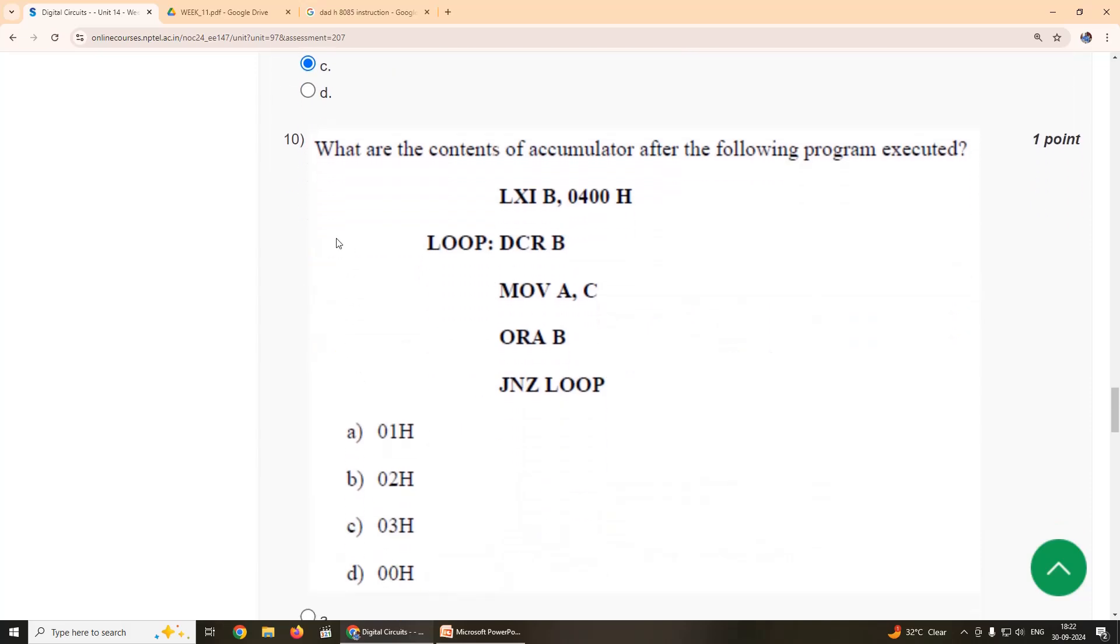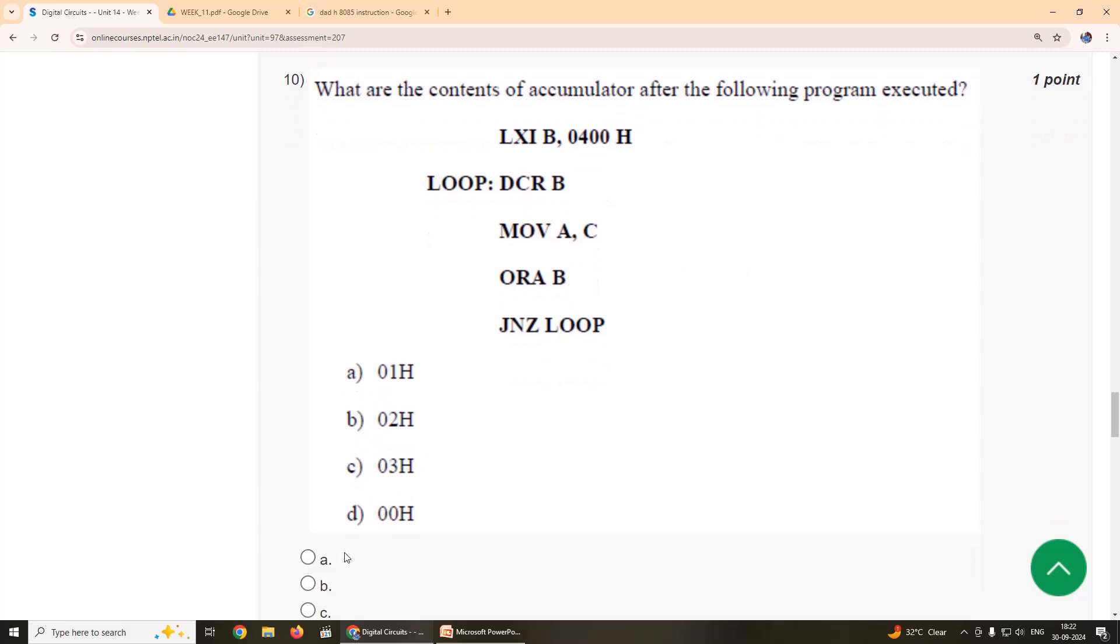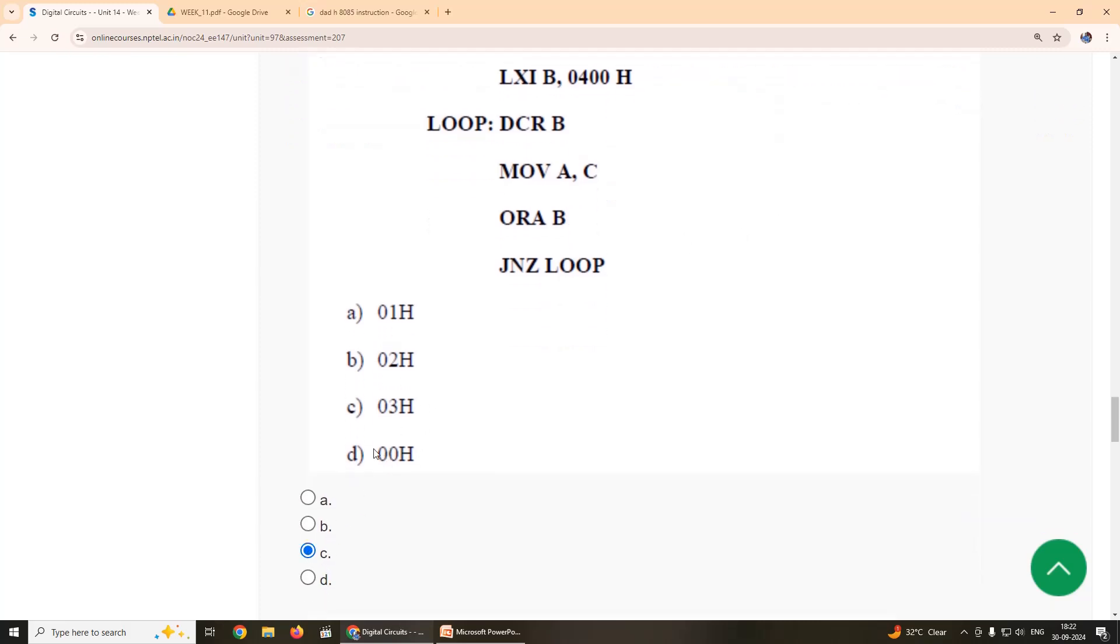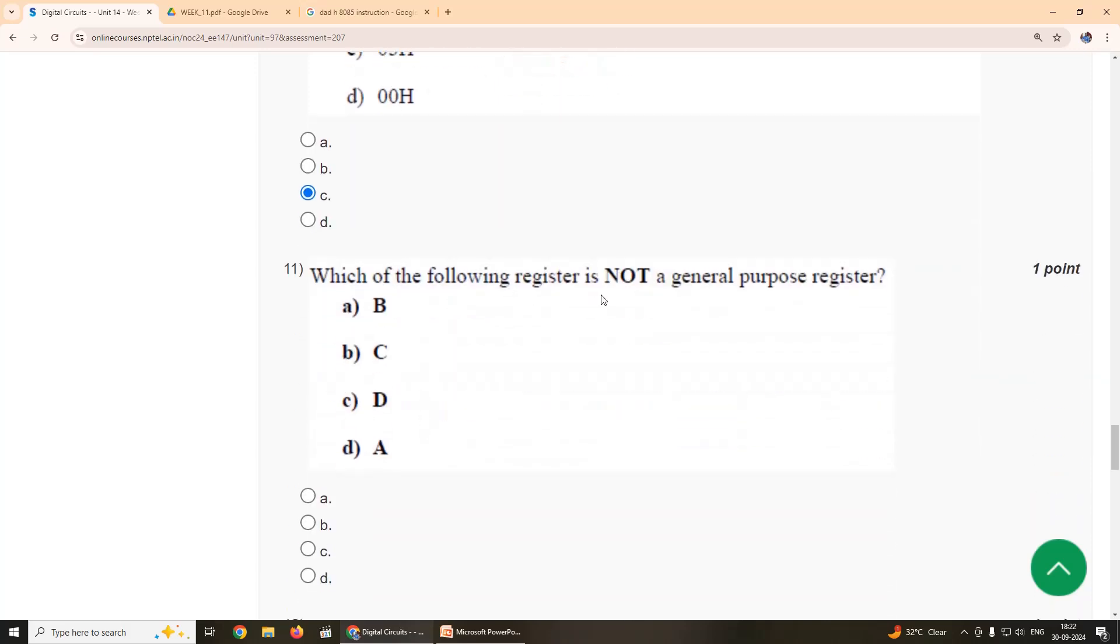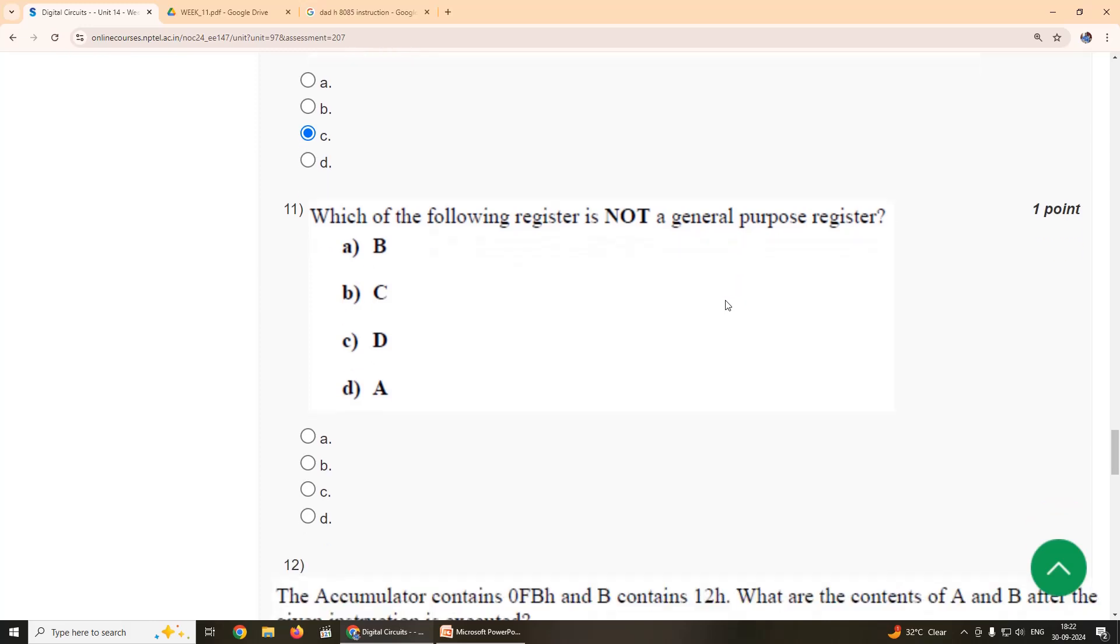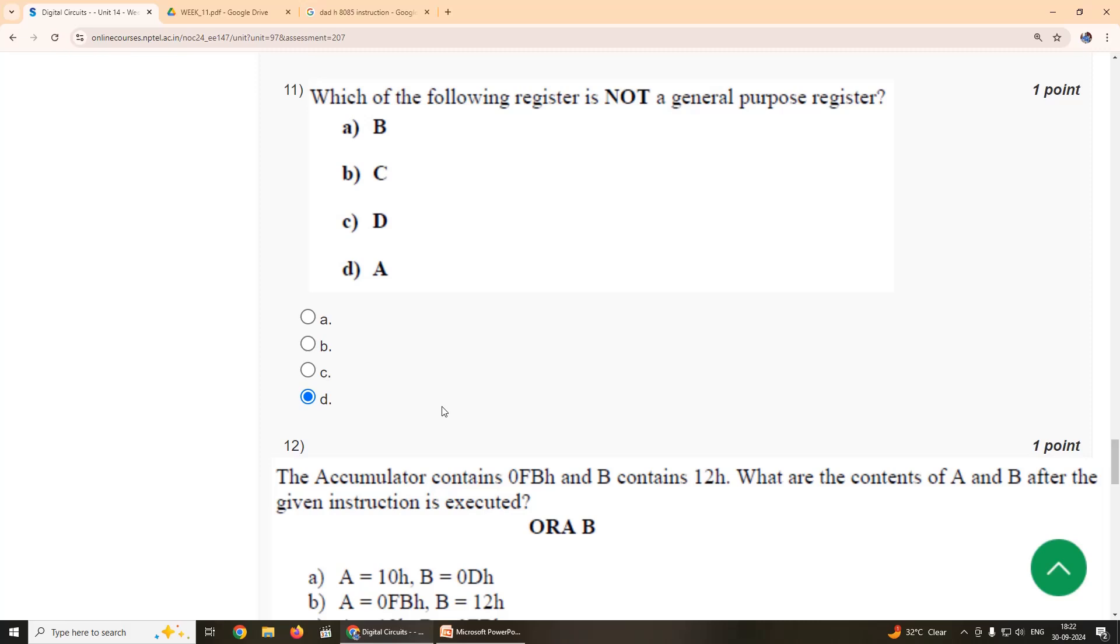Tenth one: What are the contents of the accumulator after the following program is executed? So the tenth one is 0C. Our suggestion is option C, 0C. Eleventh one: Which of the following register is not a general purpose register? So our suggestion is option A.